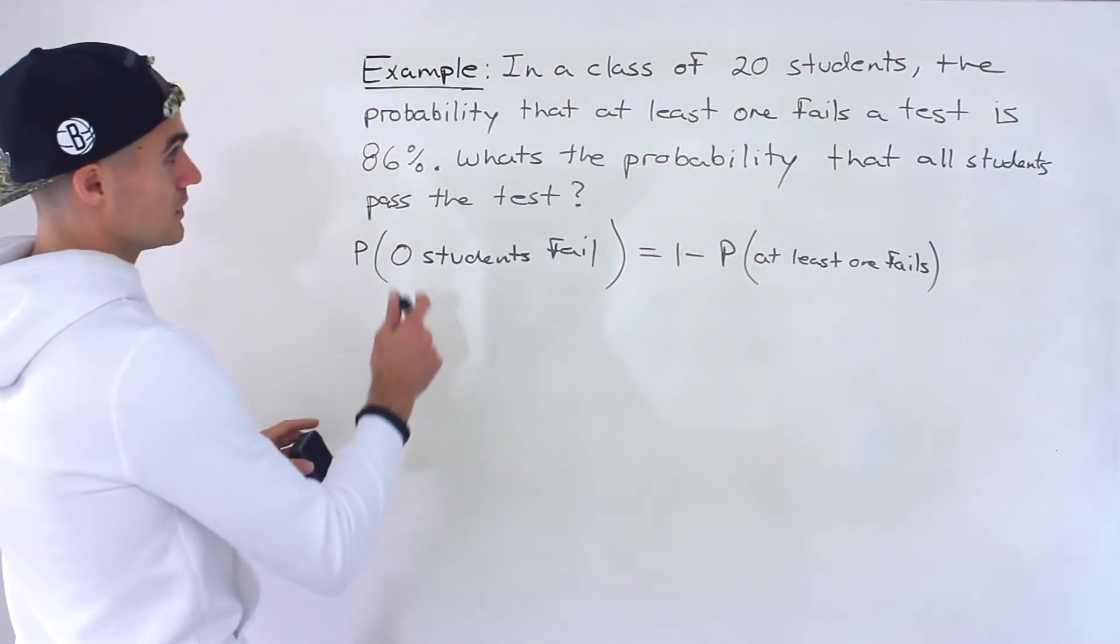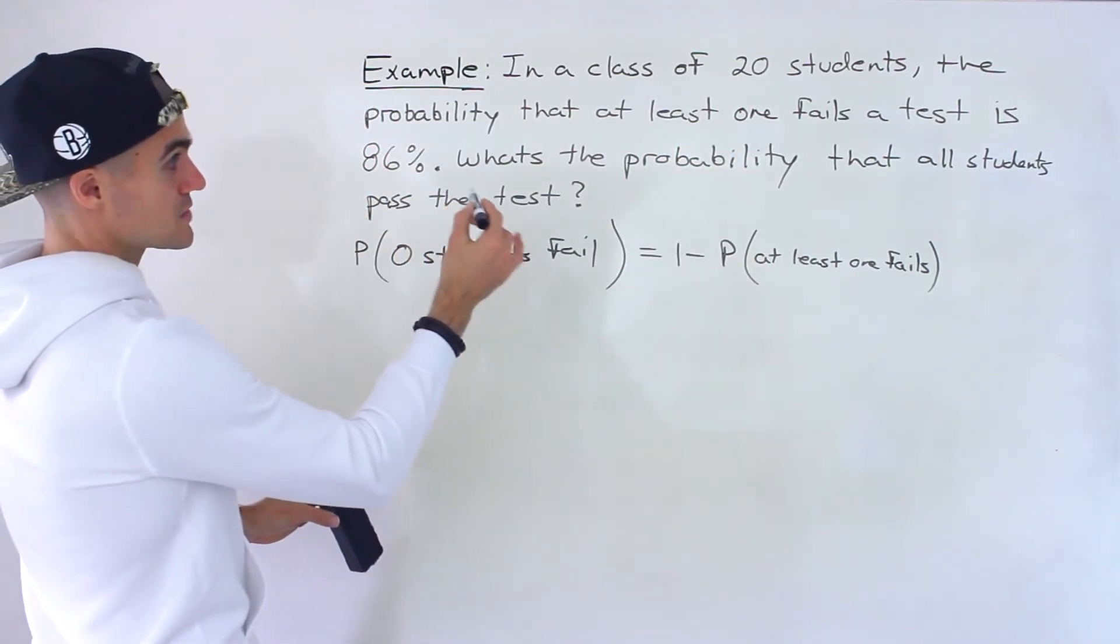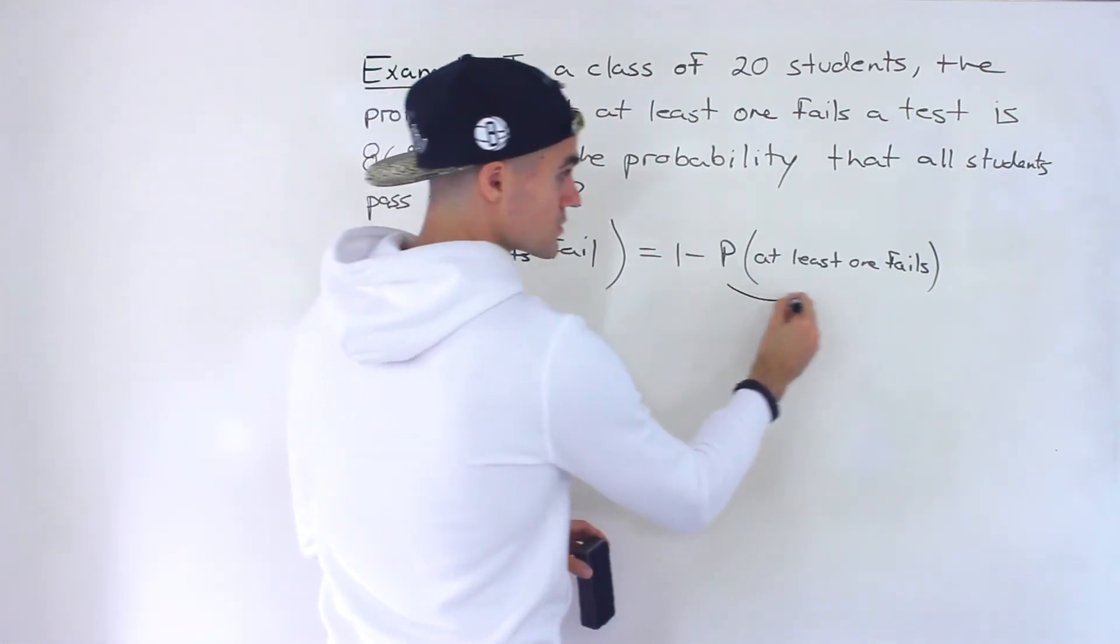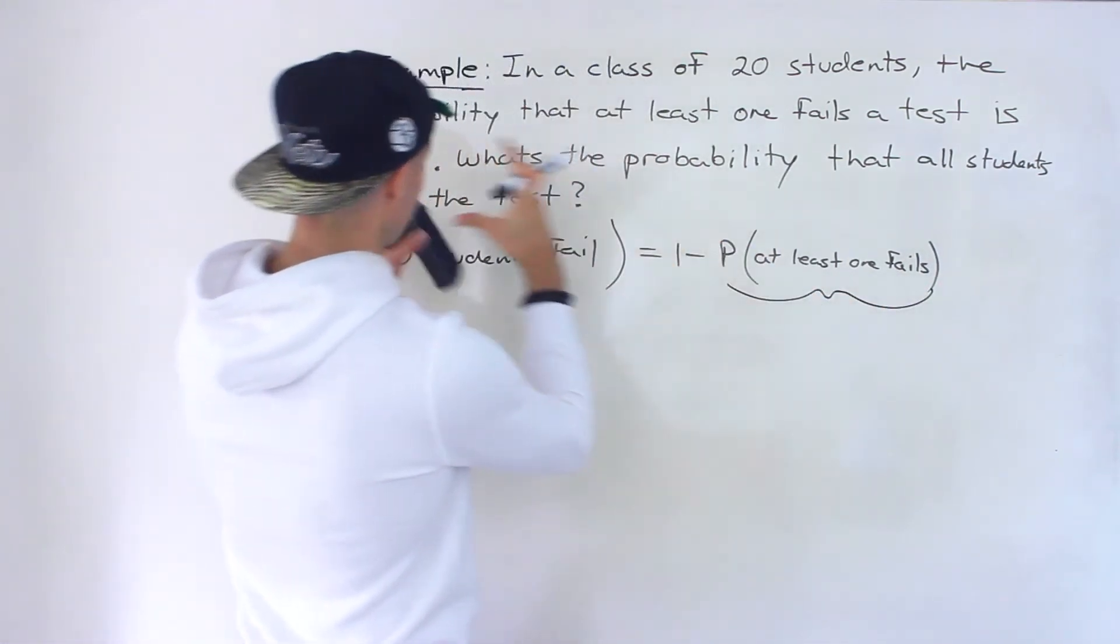But if you read the question, the probability that at least one student fails is 86%. So all those scenarios are contained within that 86% right there.